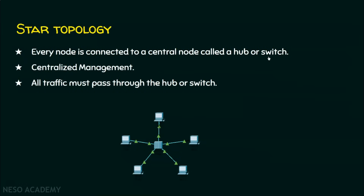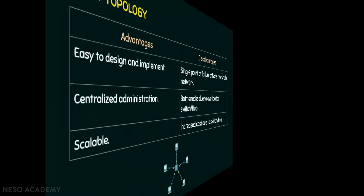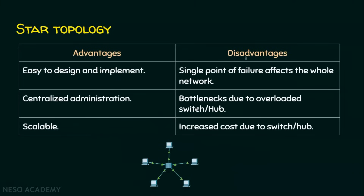There are some differences between hub and switch which will be dealt with in the next lecture. The advantages of star topology: it is very easy to design and implement. There is a centralized administrator — the hub or switch. If the switch has 24 ports, you can connect 24 computers. If you need more, you bring another switch and connect it to the first. Star topology is easy to design and implement, offers centralized administration, and is a scalable network.